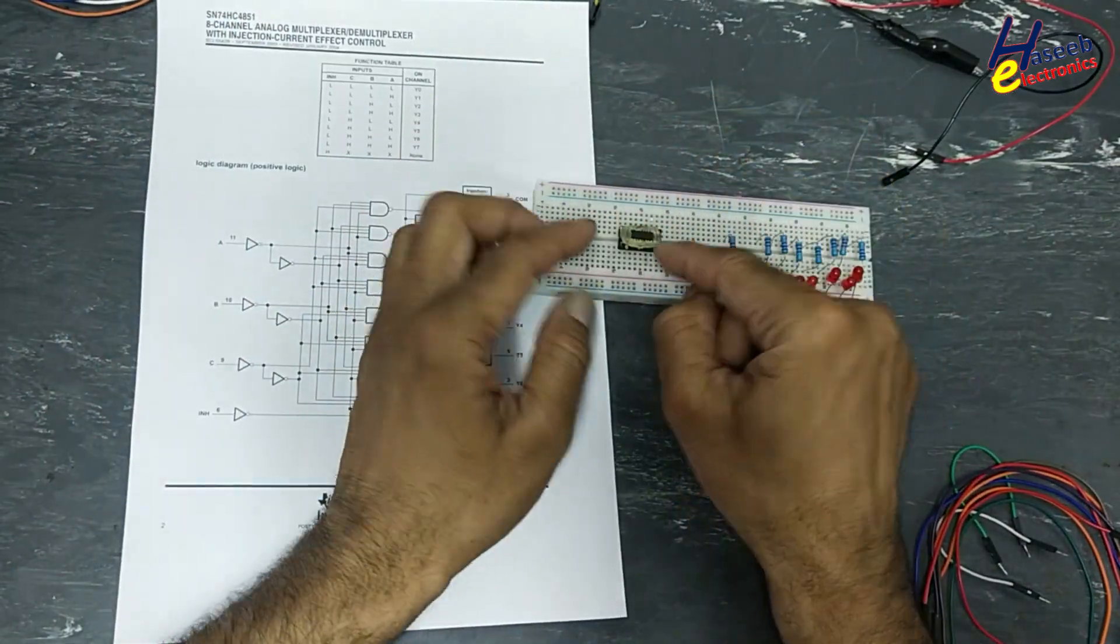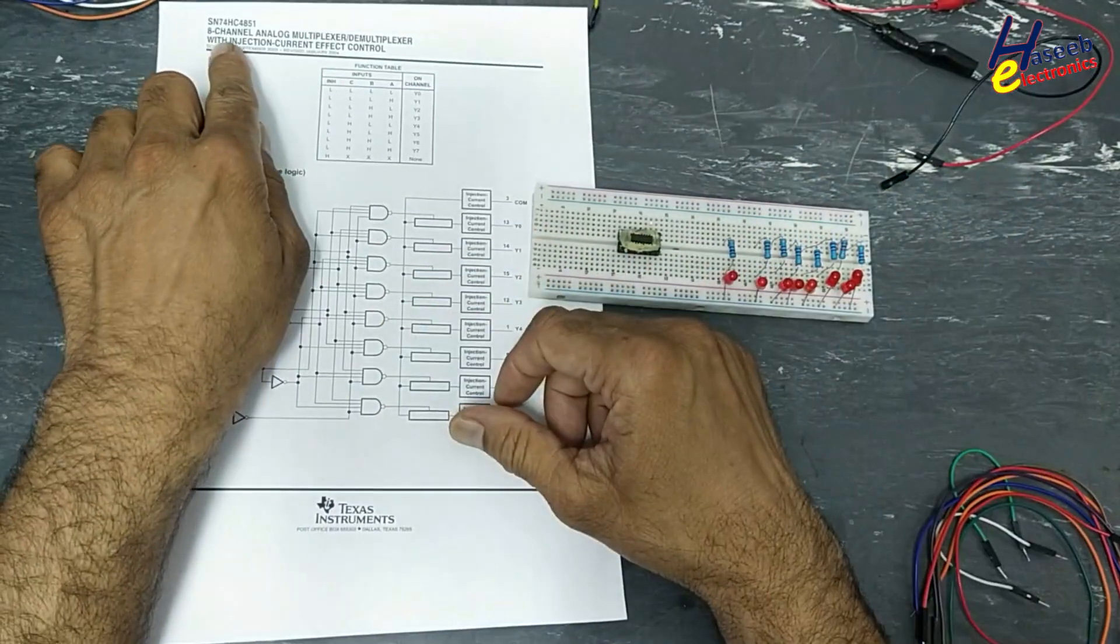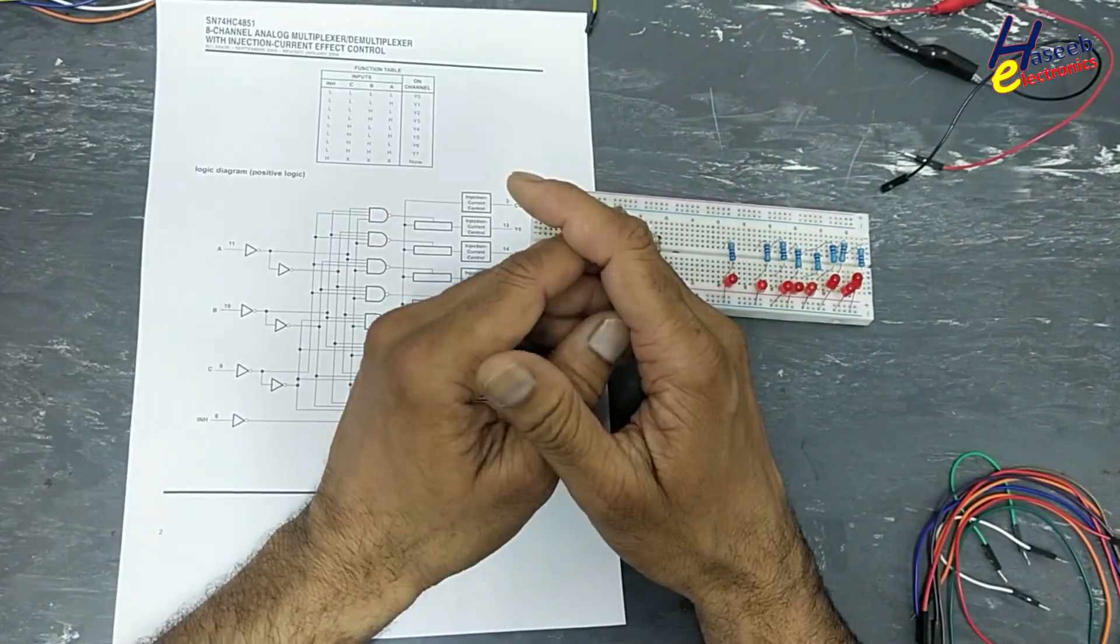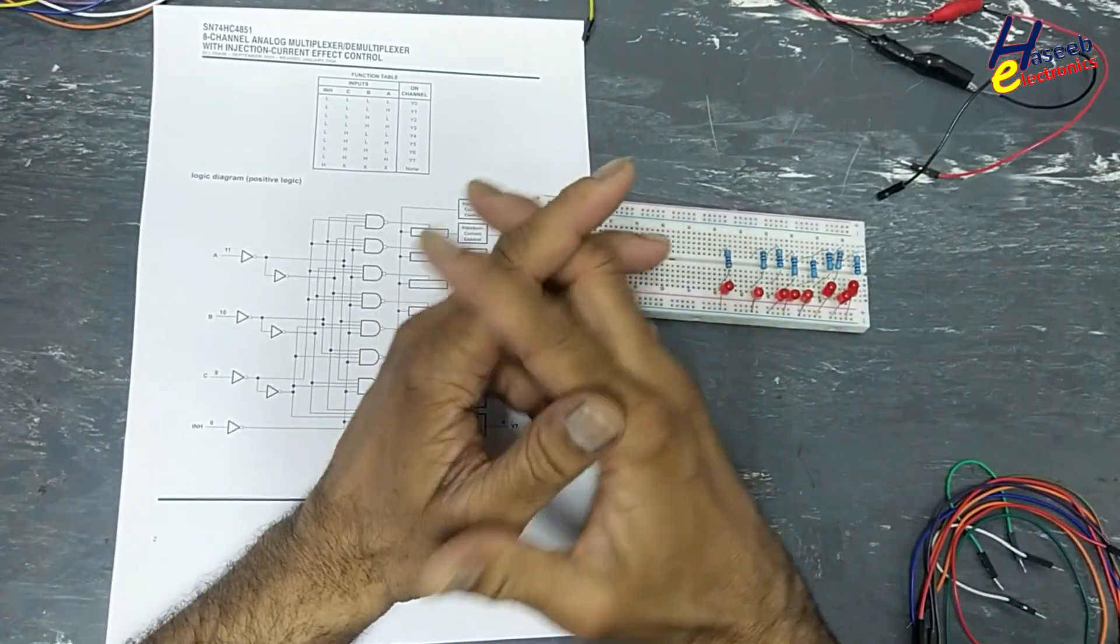74HC4851, most of the time marking is HC4851. It is an 8-channel analog multiplexer demultiplexer, most commonly used in Indian control modules, ECM.